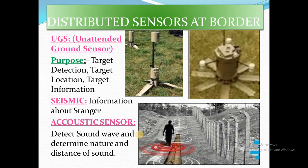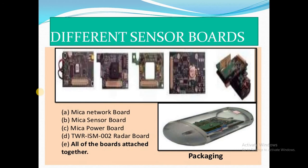WINS integrates different kinds of sensors. The types include UGS (Unattended Ground Sensors), seismic sensors, and acoustic sensors. UGS functions include target detection, target location, and target information. Seismic sensors provide information about strangers, while acoustic sensors detect sound waves and determine the nature and distance of the sound. All these sensor boards are packed together to form one wireless integrated network sensor.